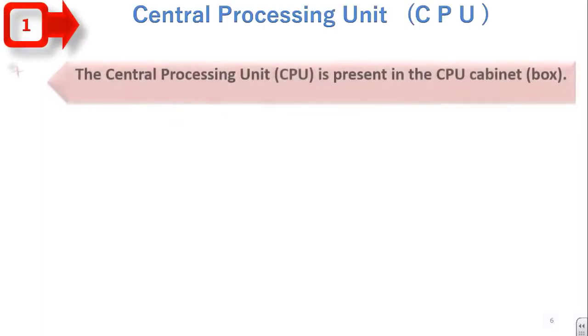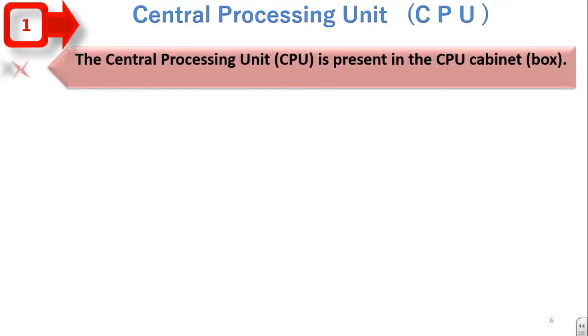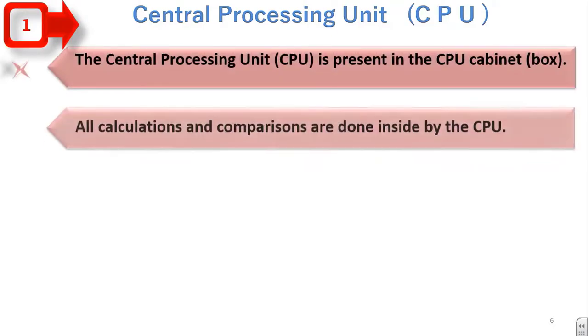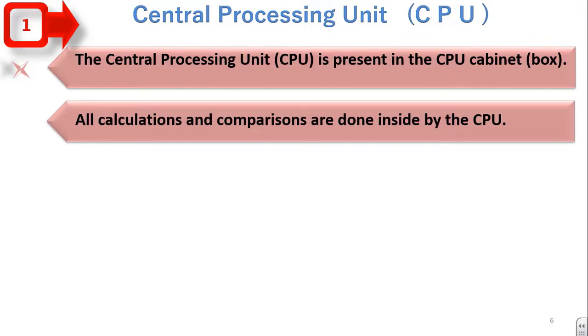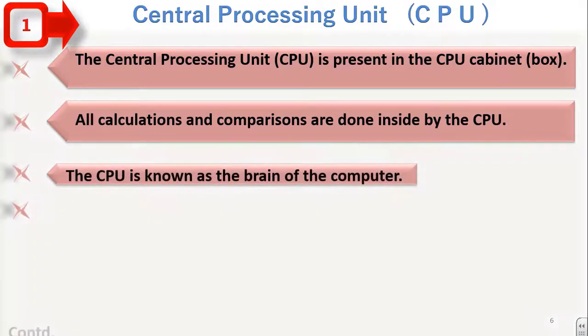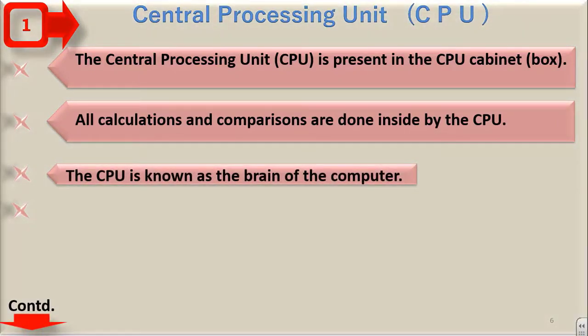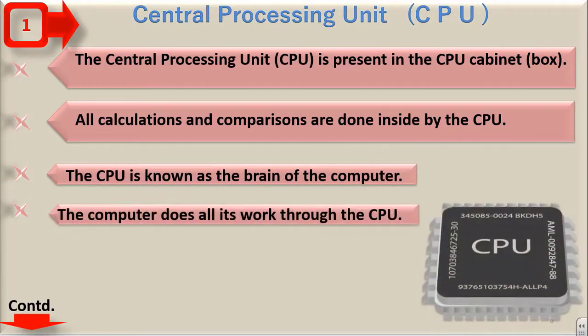The first part is Central Processing Unit, CPU. The CPU is present in the CPU cabinet box. All calculations and comparisons are done inside by the CPU. The CPU is known as the brain of the computer. The computer does all its work through the CPU.